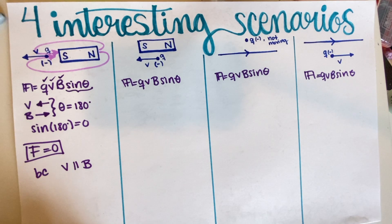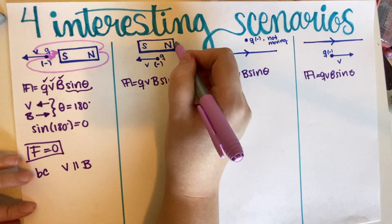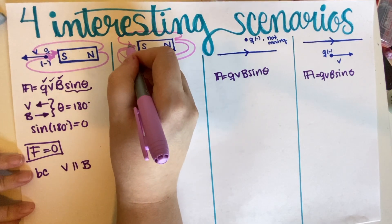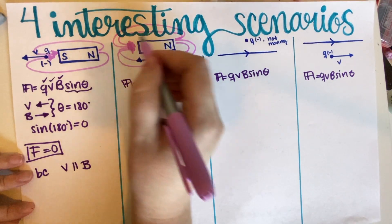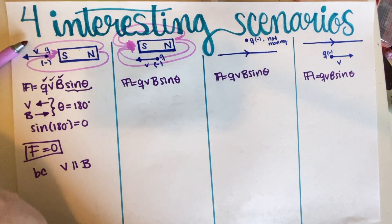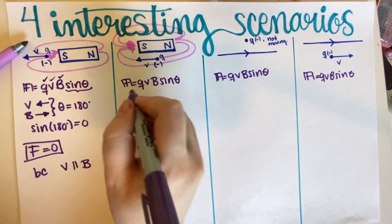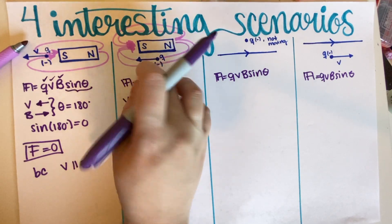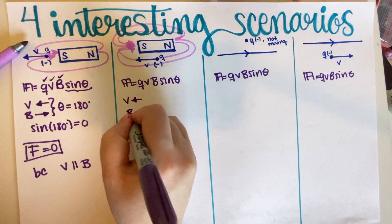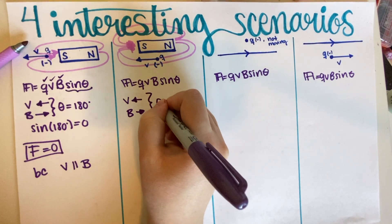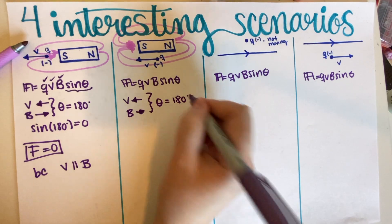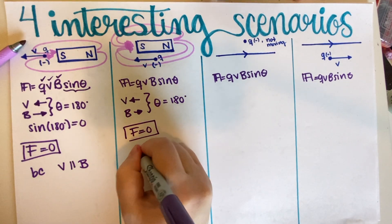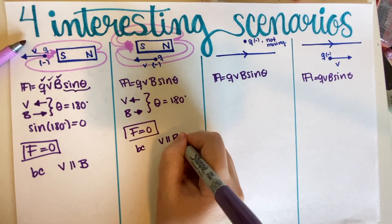For the second scenario, again drawing the magnetic field from north to south, the velocity is going to the left and the magnetic field is going to the right. We have the same situation as before: the angle is 180 degrees, so the force is equal to zero — there is no magnetic force. The reason is again that the velocity and the magnetic field are parallel to each other.